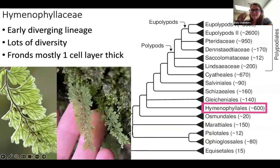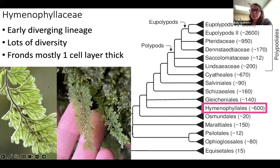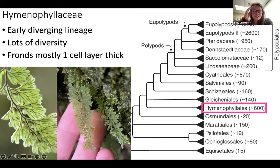Hymenophyllaceae is one of my favorite fern families. In a collapsed phylogenetic tree of the ferns, they're relatively early diverging, but they're extremely diverse — still about 600 species within this order and within the family of Hymenophyllaceae. They're colloquially called the filmy ferns, partly because of how thin their fronds are — you can essentially see straight through them. Most of them are one cell layer thick, with a few species that are two. They're very beautiful fronds to look at in the sporophyte generation, and really interesting from an evolutionary perspective.